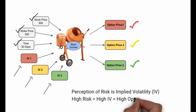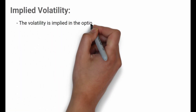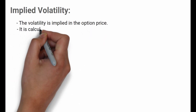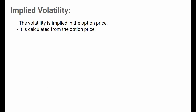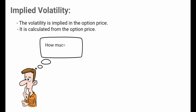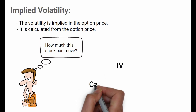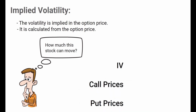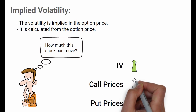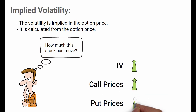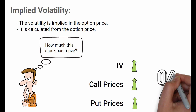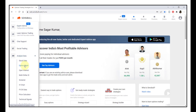The perception of risk in the market is referred to as Implied Volatility, popularly known as IV. The higher the risk, the higher the implied volatility and the higher the option prices. It is called implied volatility because the volatility is implied in the option prices — IV is calculated from the option price. IV is also the market's expectation of future volatility. It affects call and put options in the same manner, and is usually represented as a percentage value.